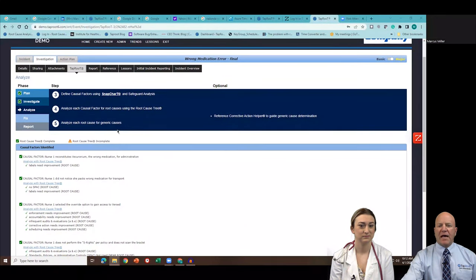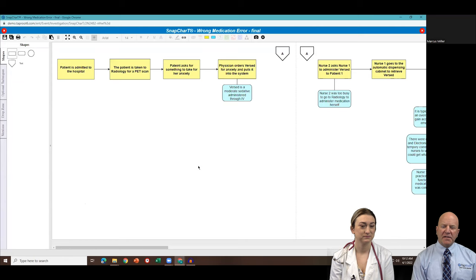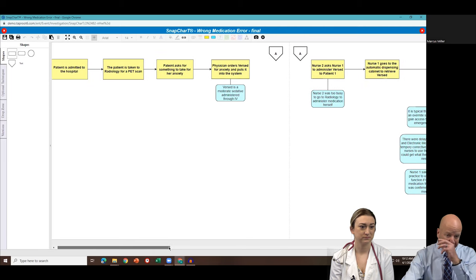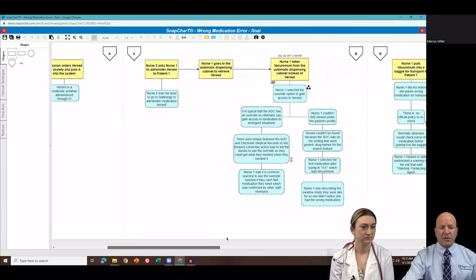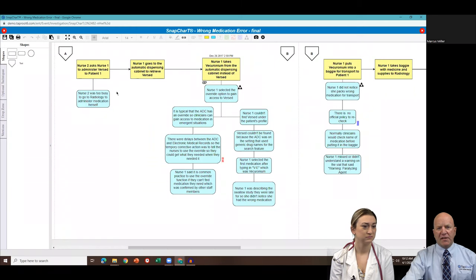So I'm going to go ahead and pull up what we call a snap chart. So this is a way that we organize the evidence that's collected, put it into a sequence of events. We ask questions about those events to really get a good understanding of this incident. And first of all, we know this patient was admitted to the hospital. If you're familiar with the story, you know that she went into radiology for a PET scan. She was claustrophobic. So she did ask for something for anxiety. And the physician ordered something. He ordered Versed. Now the nurse, the main nurse, she was really busy. So Radonda was a help-all nurse. So they gave her a call and she said she could help. So she was the one that's now going to give the patient the medication.